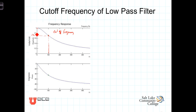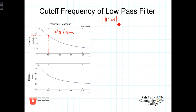So the cutoff frequency is defined as the frequency where the magnitude of this function equals 1 over the square root of 2. Components oscillating at frequencies less than the cutoff frequency will be passed through the filter, and those at higher frequencies fall in the stop band and are significantly attenuated. Let's now calculate what that cutoff frequency is, starting with the magnitude of the frequency response function, the magnitude of H of j omega.